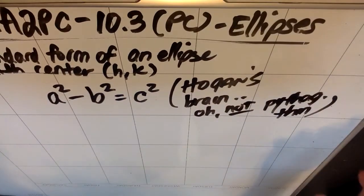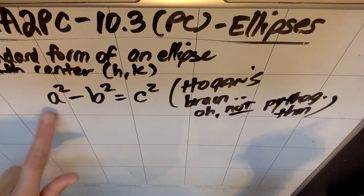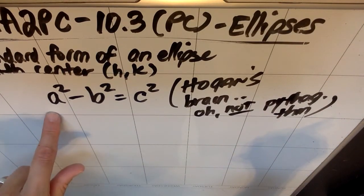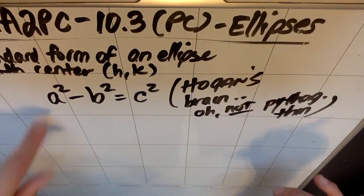So in my brain I always think oh it's the one that's not Pythagorean theorem. And I know that it's a minus b because a is the bigger number and b would be the smaller number, so it's a squared minus b squared, not the other way around.